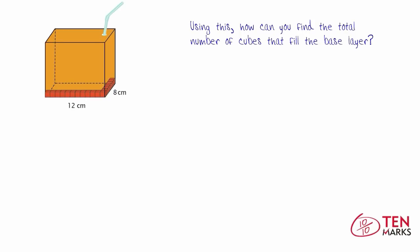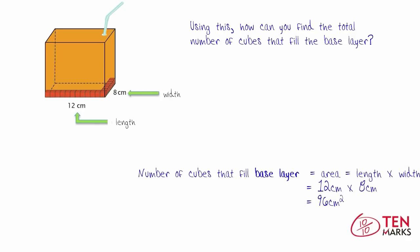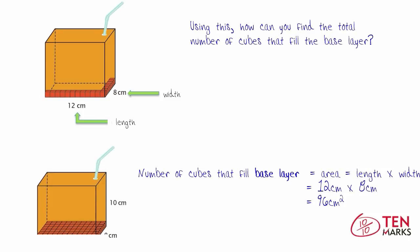Using this, how can you find the total number of cubes that fill the base layer? Take the length and the width and look at this equation. The base layer, or the area, equals length times width. So you'll multiply 12 by 8, and you get 96 square centimeters. So for this base layer, you could fit 96 cubes.